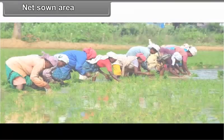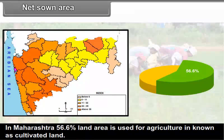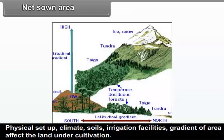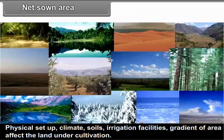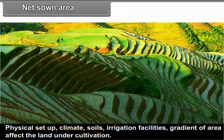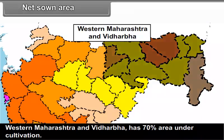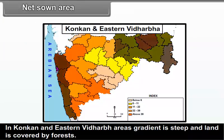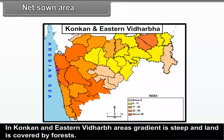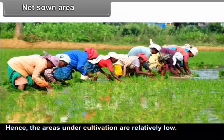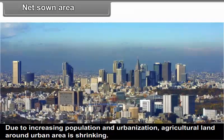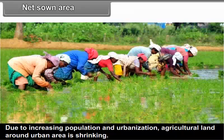Net Sown Area: In Maharashtra, 56.6% of land area is used for agriculture, known as cultivated land. Physical setup, climate, soils, irrigation facilities and gradient of the area affect the land under cultivation. Western Maharashtra and Vidarbha have 70% area under cultivation. In Konkan and eastern Vidarbha, the gradient is steep and land is covered by forests, so the areas under cultivation are relatively low. Due to increasing population and urbanization, agricultural land around urban areas is shrinking.